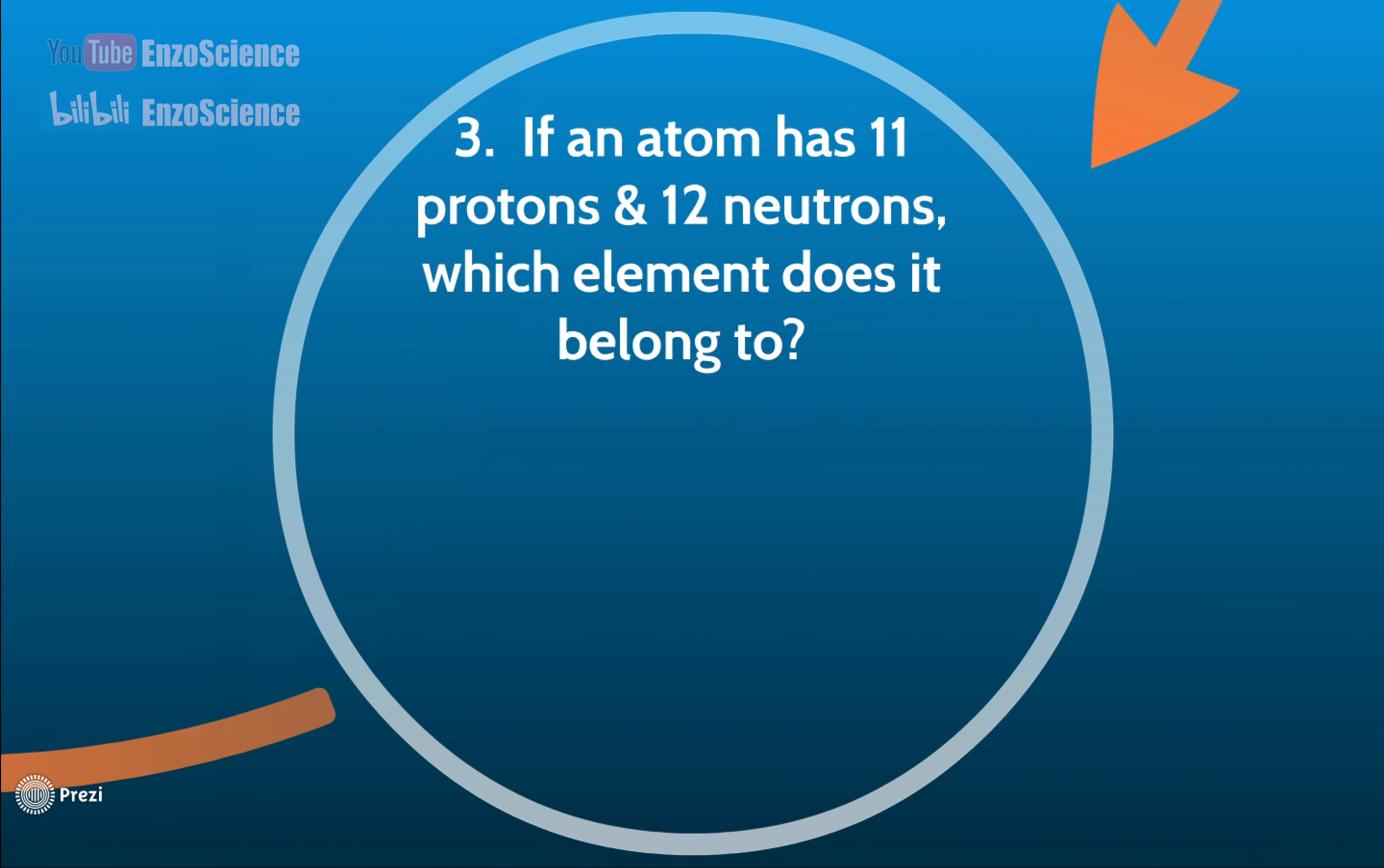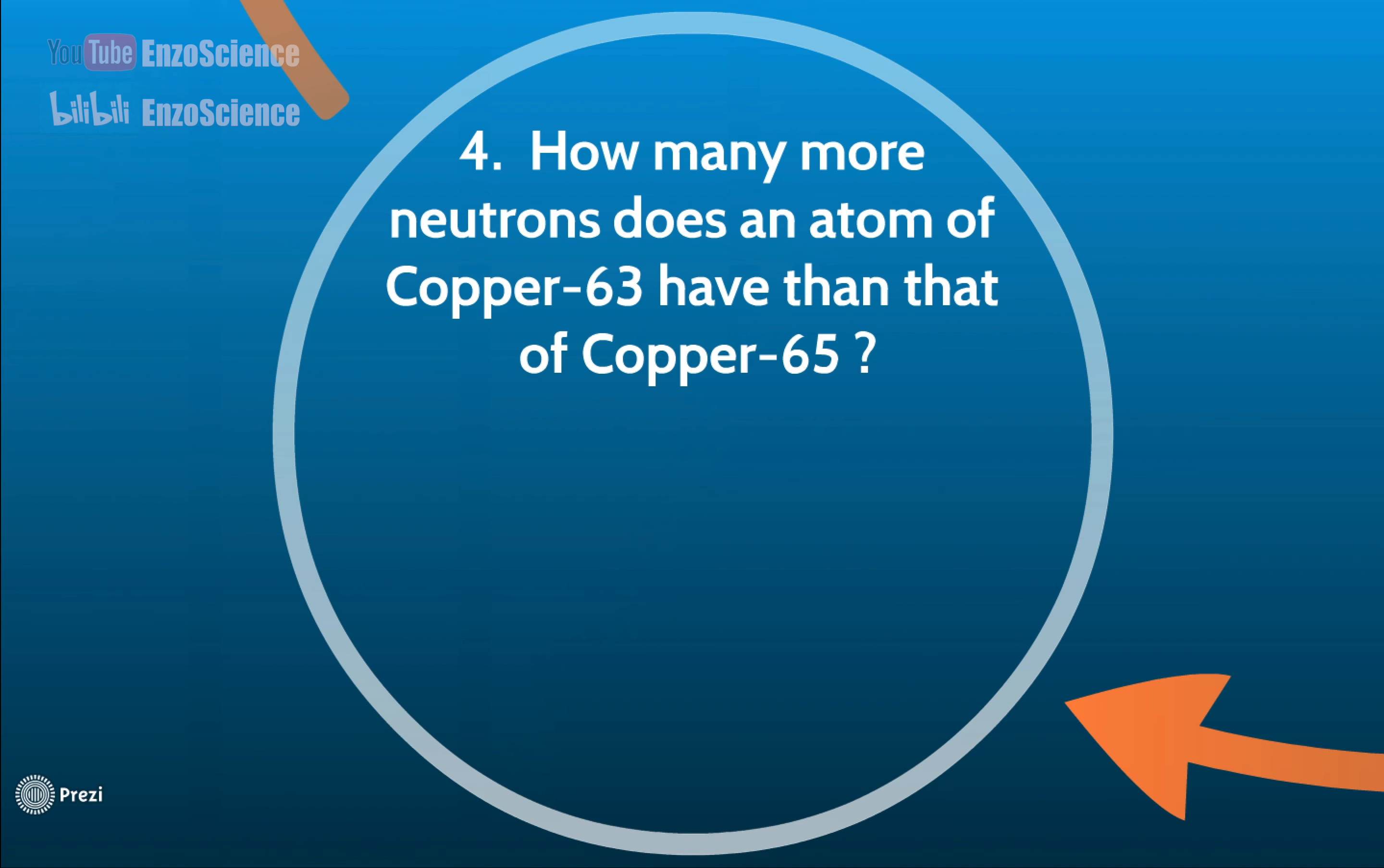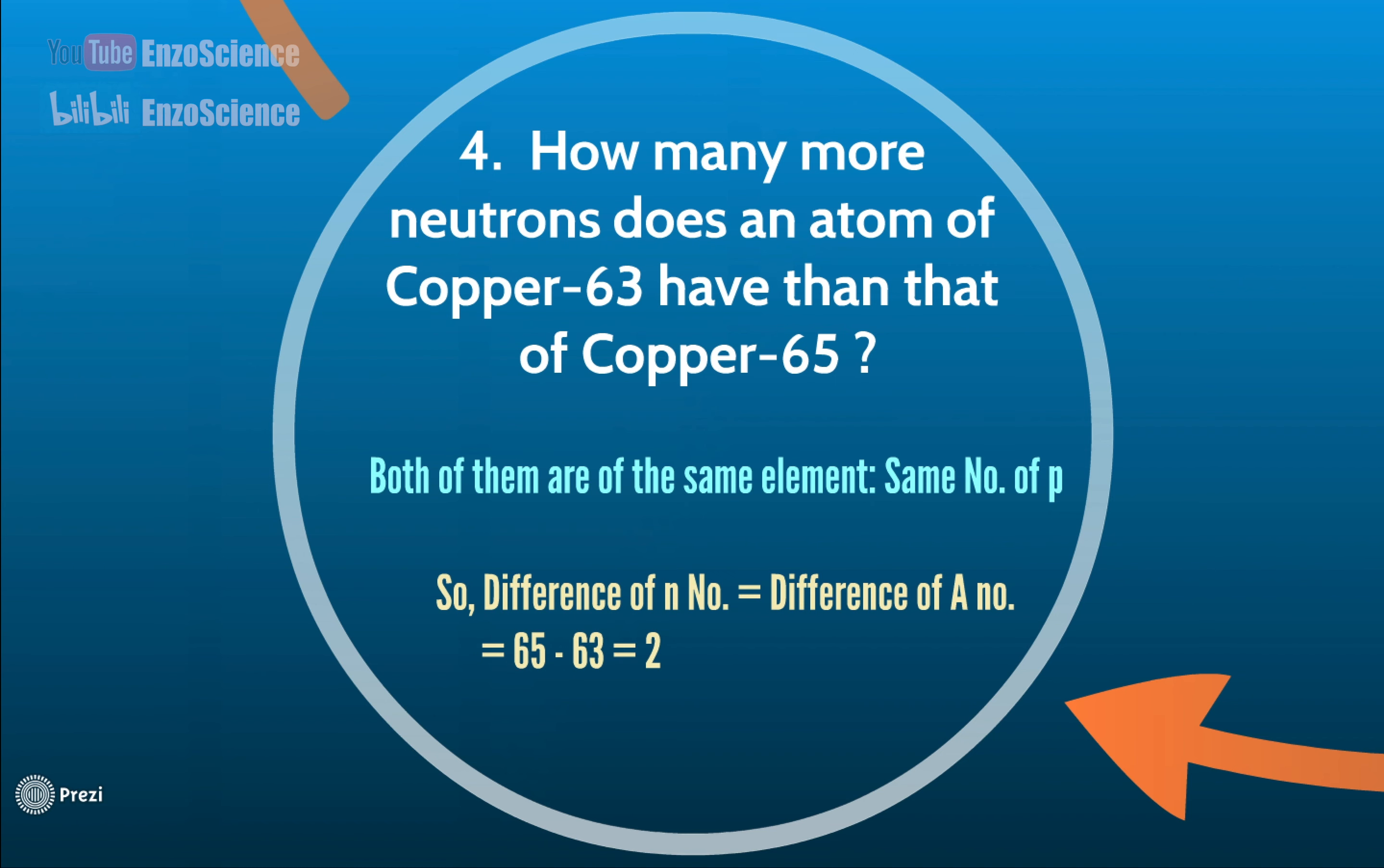Question 3: What is the element with 11 protons and 12 neutrons? For this question, you can refer to periodic table and know this is sodium. The fourth question is, how many more neutrons does an atom of copper-65 have than that of copper-63? Because they are both copper, the proton numbers are the same, and their mass number difference equals their neutron number difference, which is 65 minus 63, equal to 2.